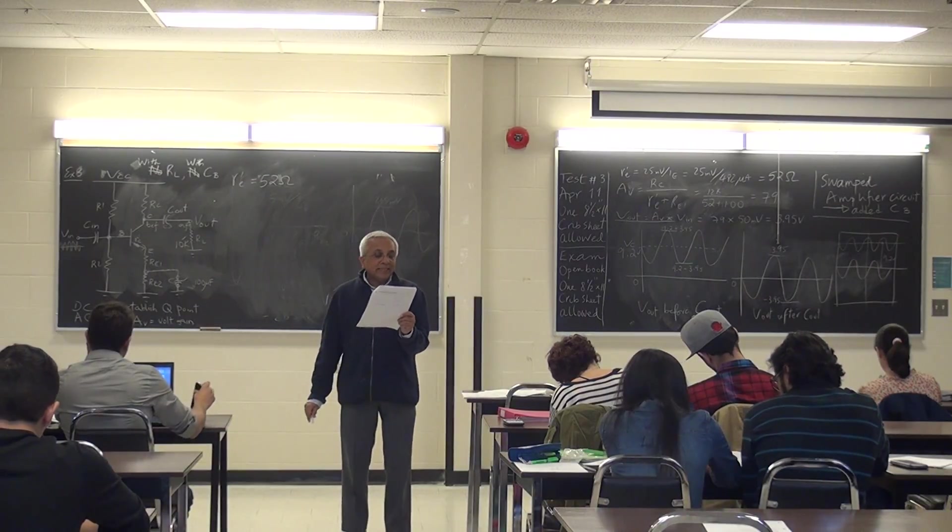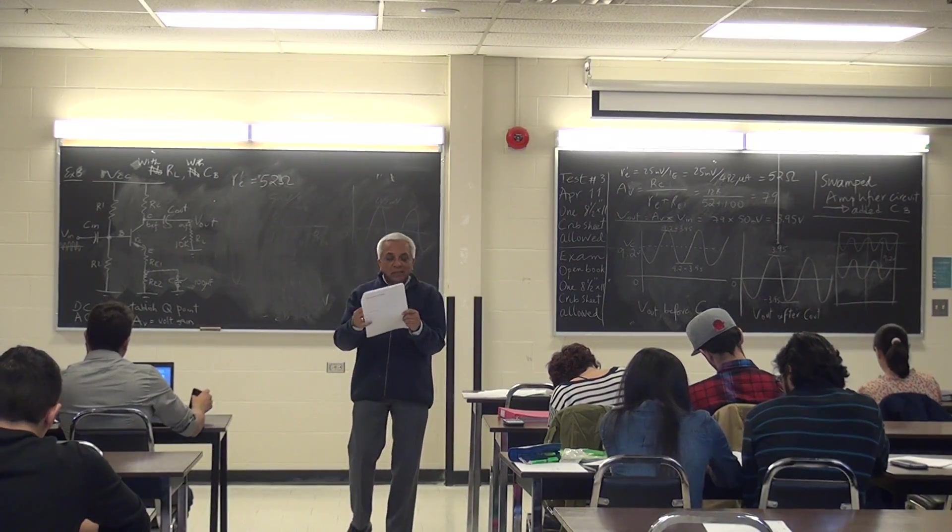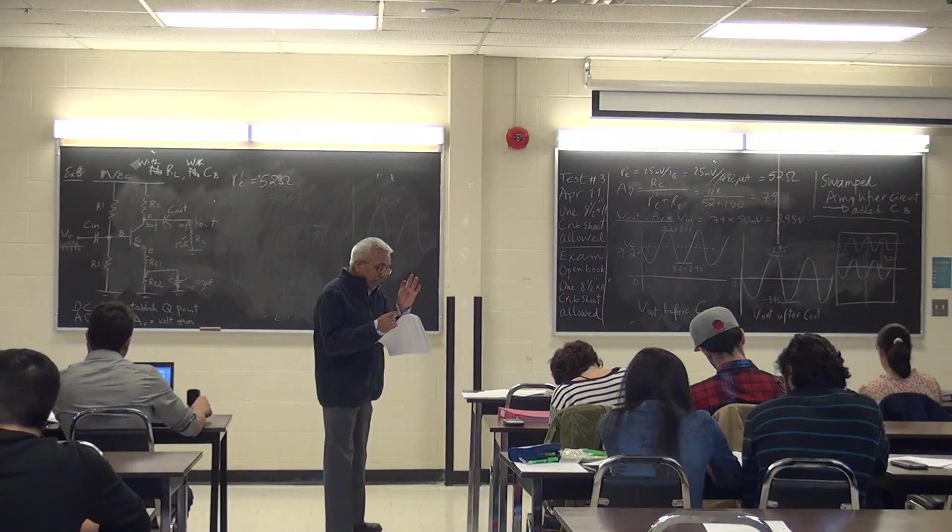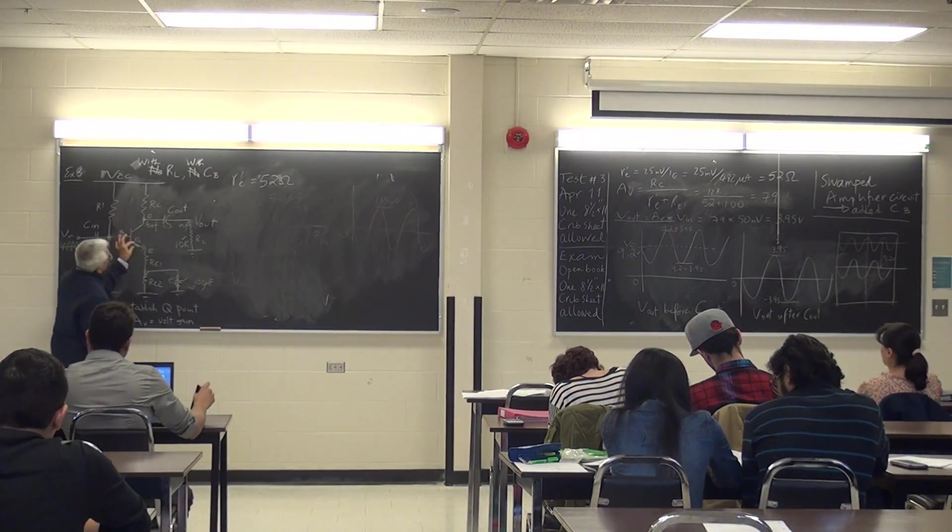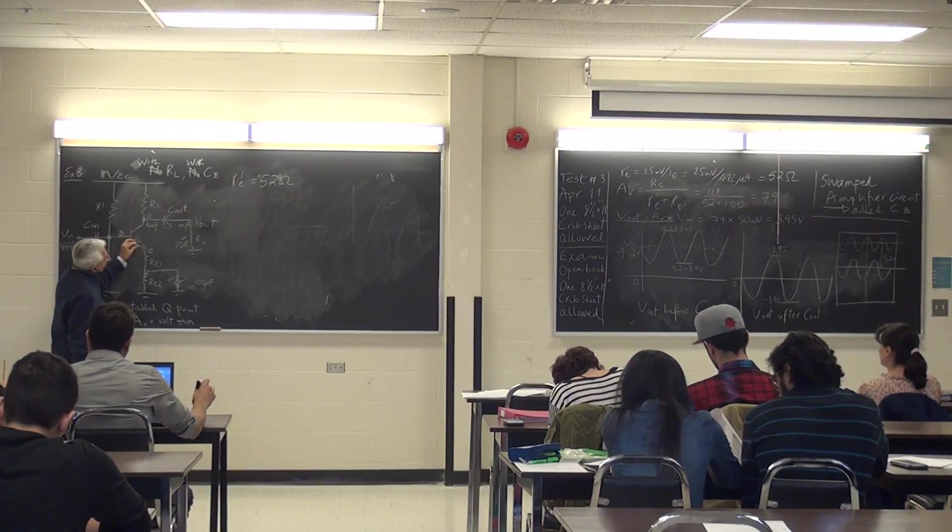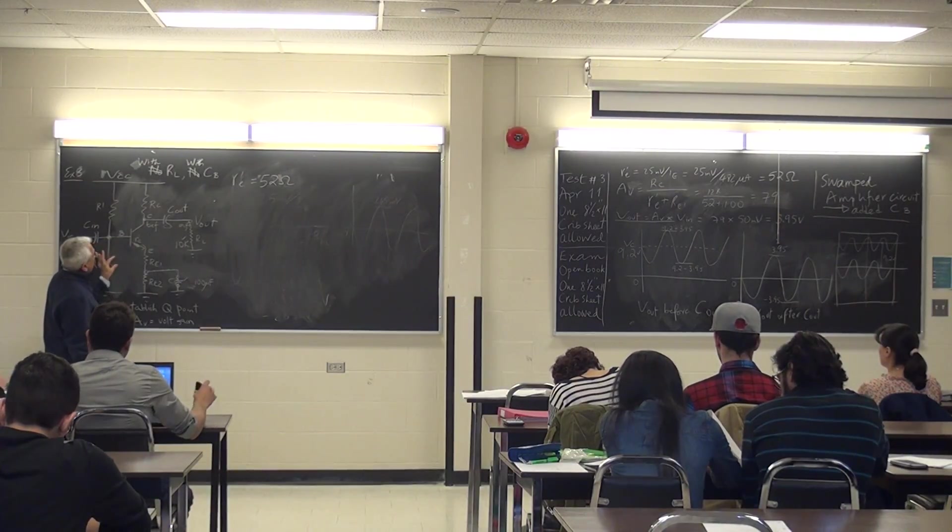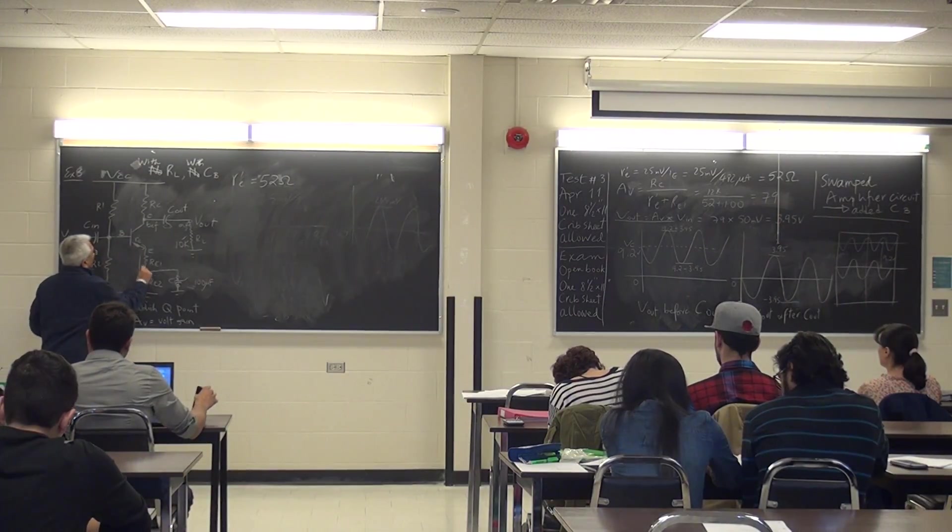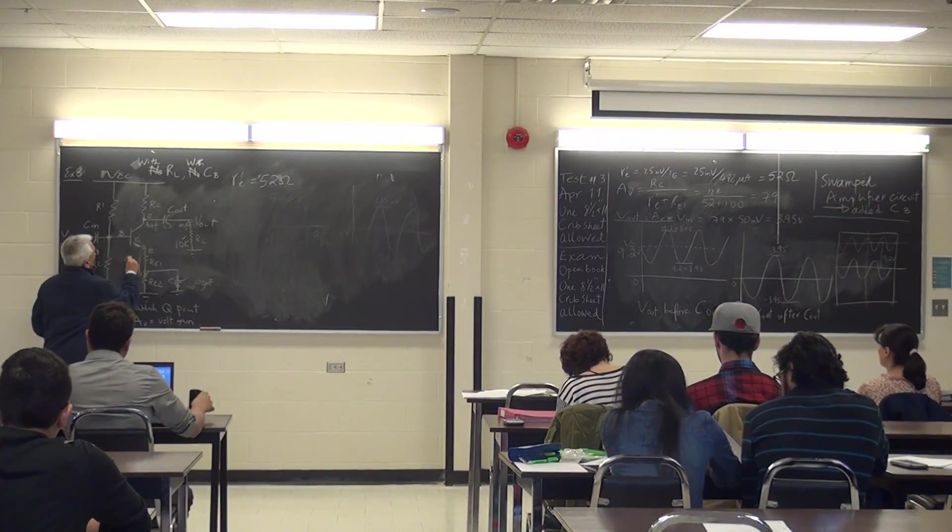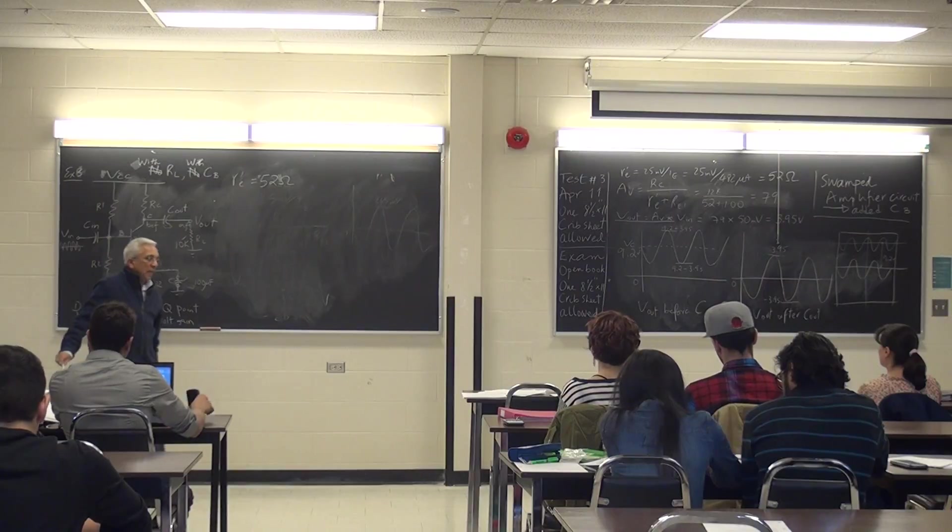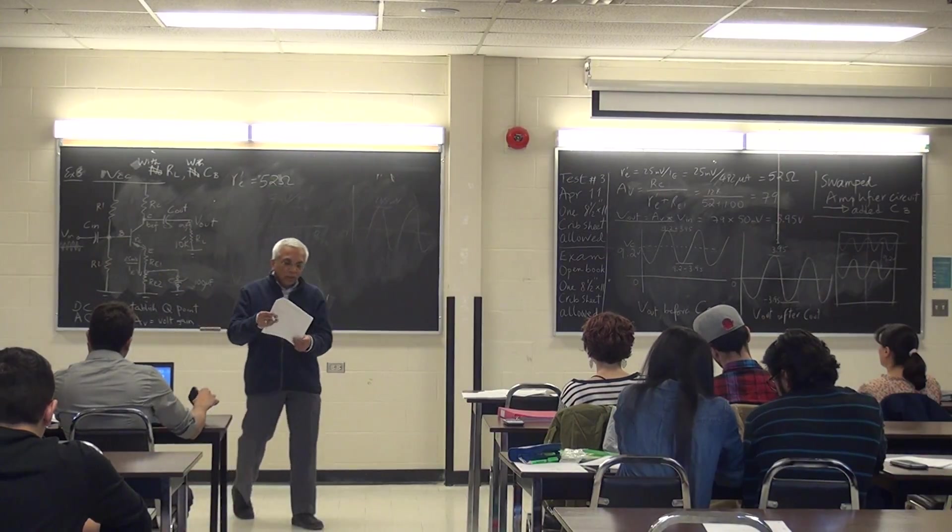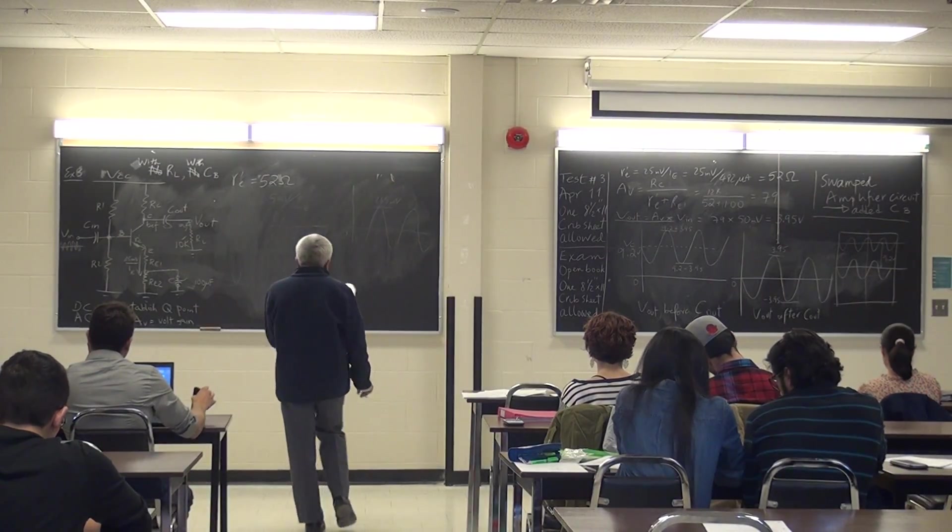That 25 millivolts has nothing to do with an input signal. It is just something that works that internal AC resistance simplifies to 25 millivolts divided by this current here. So 25 millivolts divided by IE is r'e. Okay? So that's 52 ohms.